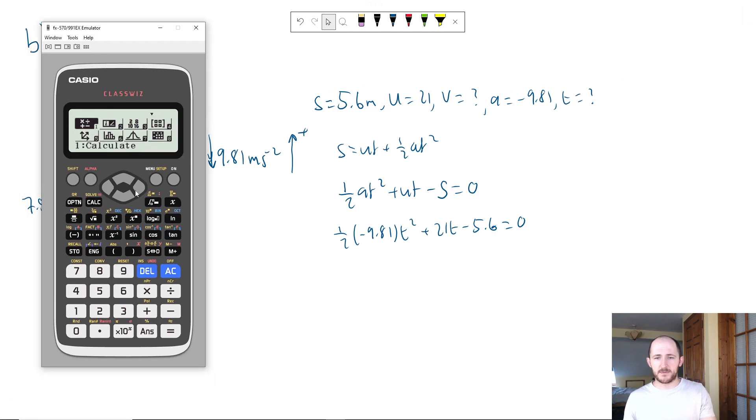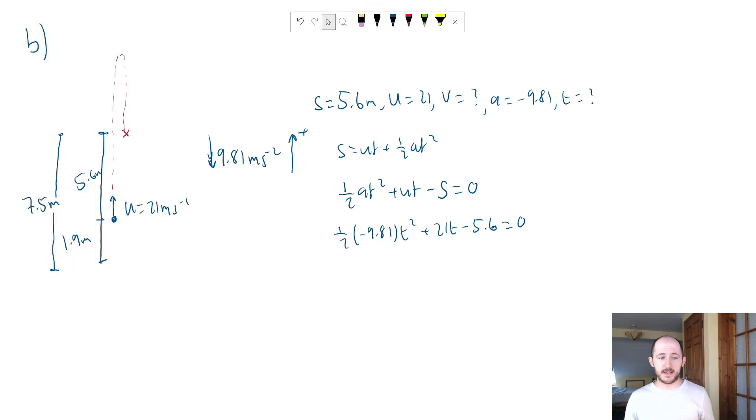So we have a half negative 9.81 T squared plus 21T minus 5.6 equals zero. And what we can do now is basically just use our calculator to solve. Go down to equation slash func. Go to polynomial because remember we have a power greater than 1. Polynomial degree is 2. And the number in front is going to be a half. We can actually type in an equation like this. And then when we press equals, it does it for us. So we can be extra lazy. And it gives us two times. Now I like to do it to 3SF. So we could do T is equal to 3.99 dot dot dot, which is equal to 4.00 seconds to 3SF.